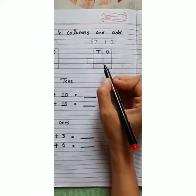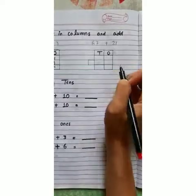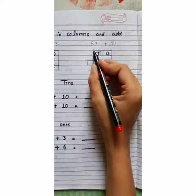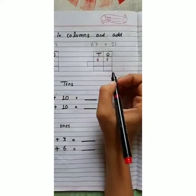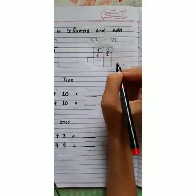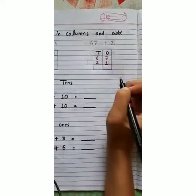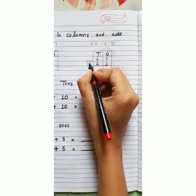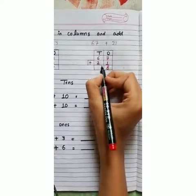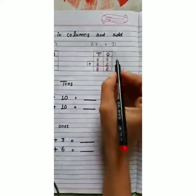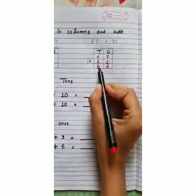Now take another example: sixty-seven plus twenty-one. Both are two-digit numbers. We place six at tens place and seven at one's place for sixty-seven. For twenty-one, two goes at tens place and one at one's place. Seven plus one equals eight, and six plus two equals eight. So, sixty-seven plus twenty-one equals eighty-eight.